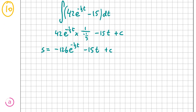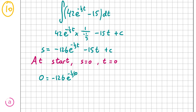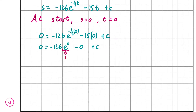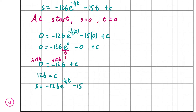We call this expression s for displacement. At t = 0 the distance must also be 0, so substituting t = 0 and s = 0: 0 = −126e^0 − 15(0) + c. Since e^0 = 1, this gives 0 = −126 + c, so c = 126. Therefore our expression for displacement is s = −126e^(−t/3) − 15t + 126.